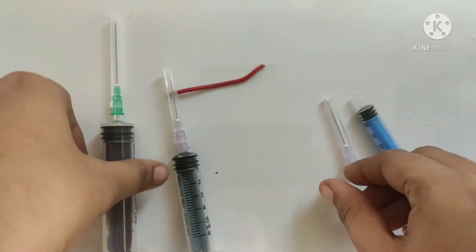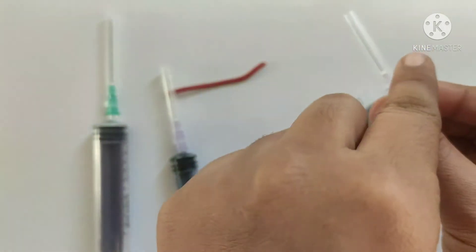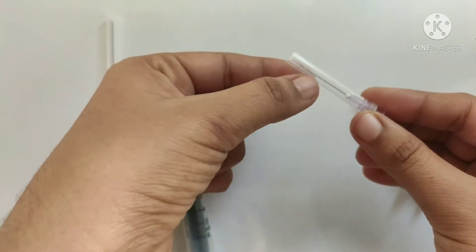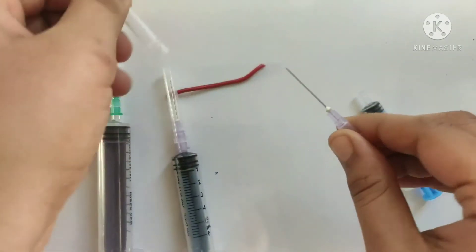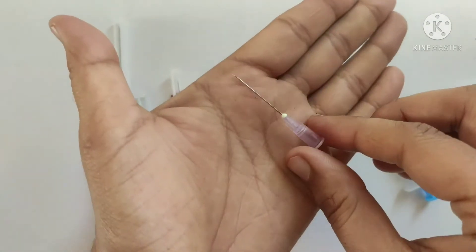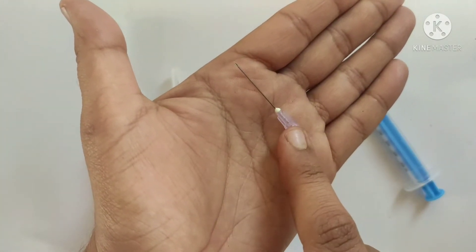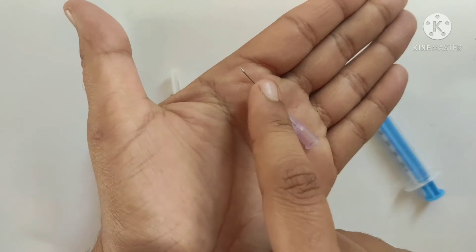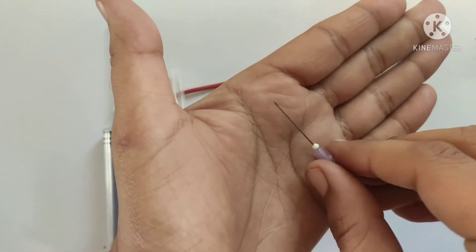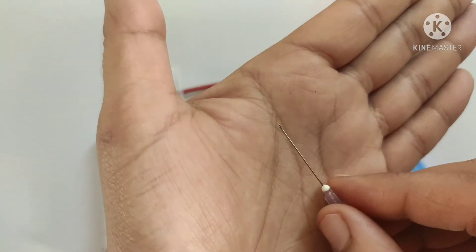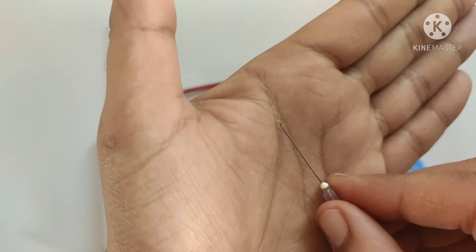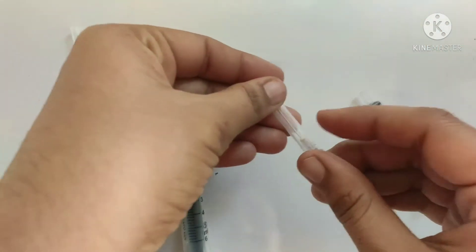Now let's look at the parts of needle. This is known as guard of the needle. Opening it, we get this needle. Now it has three parts: this is the hub of the needle, this is the shaft of the needle, and upper part is known as beveled tip. Now what is the use of this beveled tip?